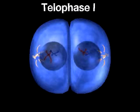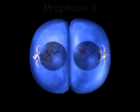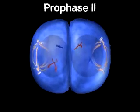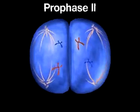The second division of meiosis now proceeds. During prophase II, a spindle forms in each of the two new cells.